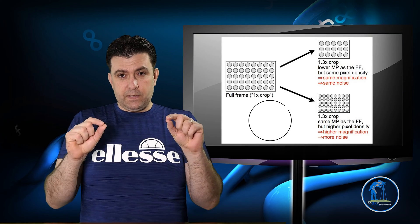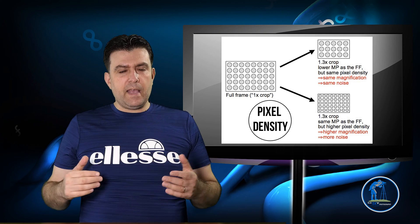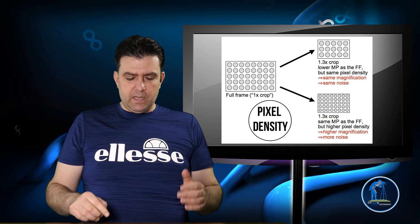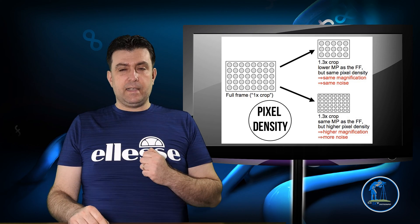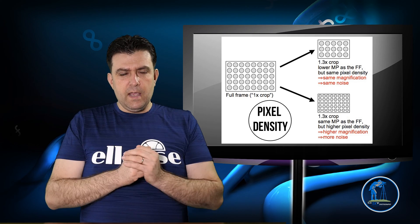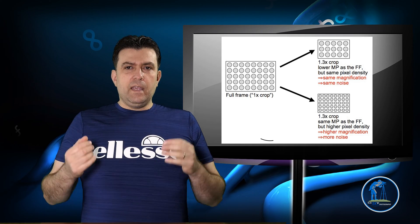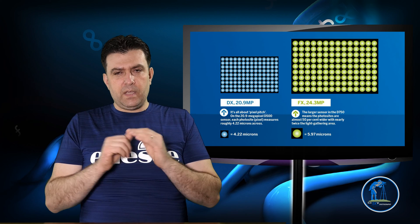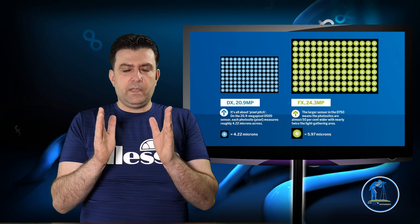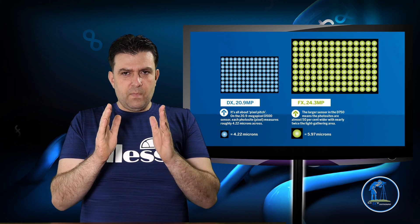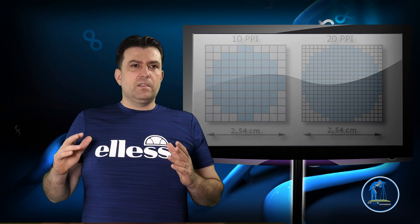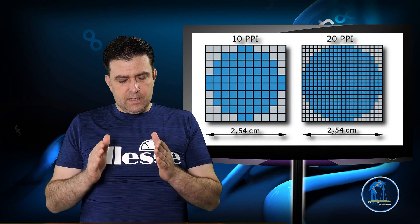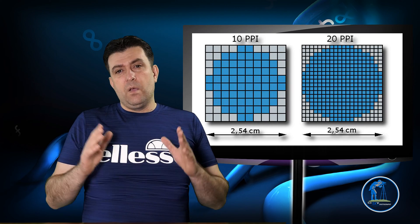Pixel density means that a specific size of sensor — let's say a 24 megapixel sensor — has 24 million pixels on it. If you have a full-frame sensor with 24 million pixels and an APS-C size sensor which is much smaller but also has 24 million pixels, then the pixels on the APS-C sensor are much smaller, because they have to jam 24 million pixels into a smaller space. This means the pixel density on the APS-C sensor will be higher than on the full-frame sensor.